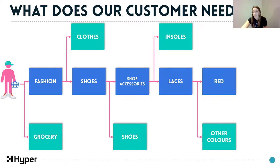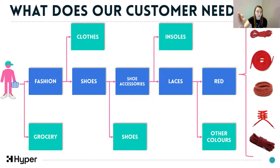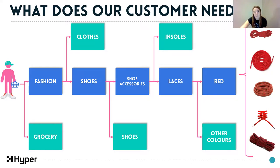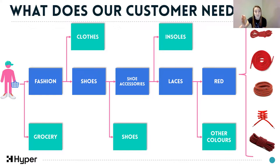Within that customer need state is a group of products to pick from. So even if Harry had ordered one particular type of red shoelace that was out of stock, if we swapped it for any other type of red shoelace, whilst he might be a little bit miffed it wasn't exactly right, it's still satisfying that customer need. He's less likely to say that was a bad customer experience - he's still likely to be quite satisfied with that swap.